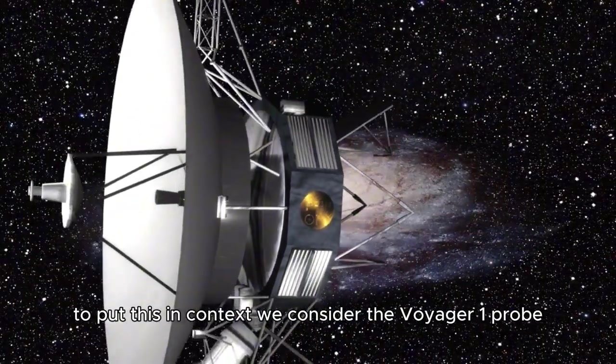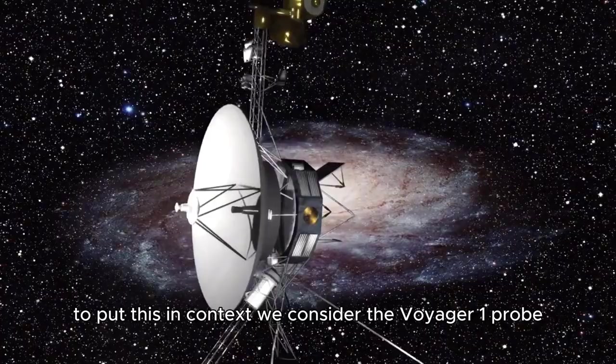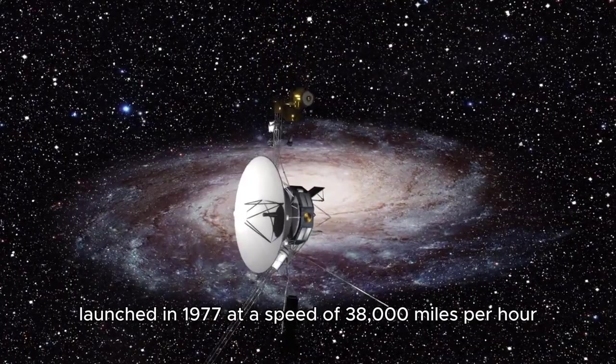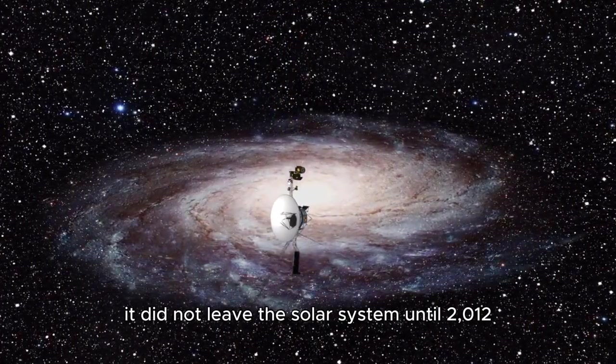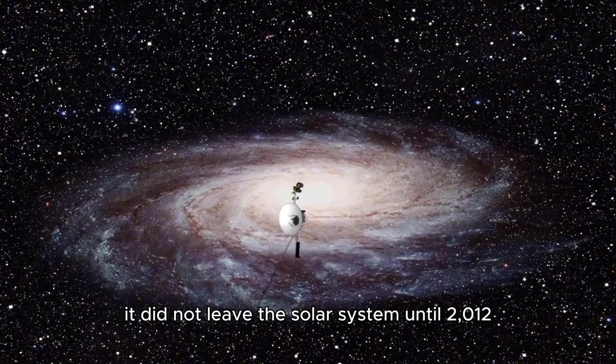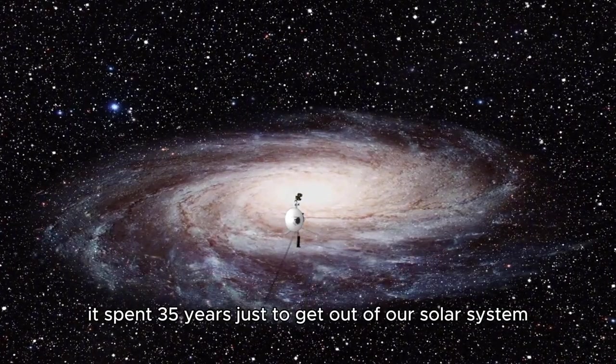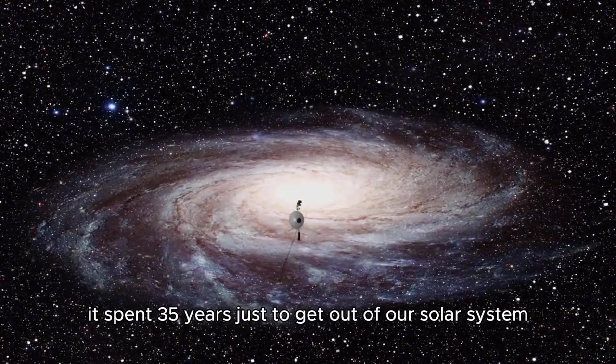These figures alone demonstrate the immense scale of our solar system. To put this in context, we consider the Voyager 1 probe, launched in 1977 at a speed of 38,000 miles per hour. It did not leave the solar system until 2012. This means it spent 35 years just to get out of our solar system.